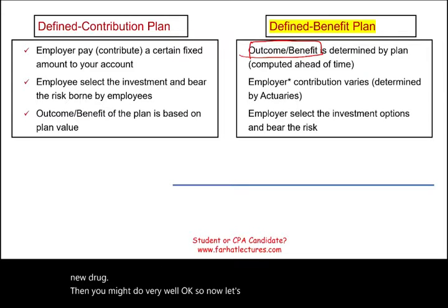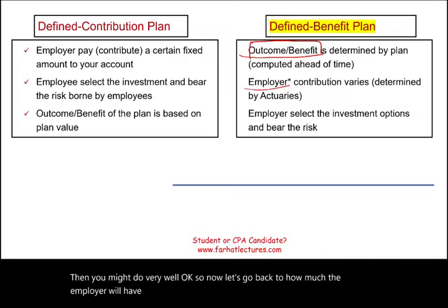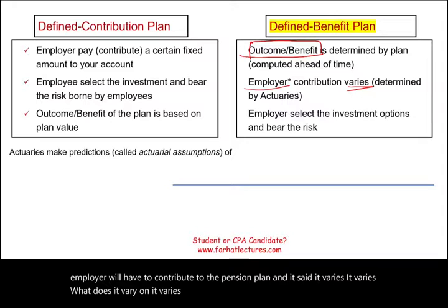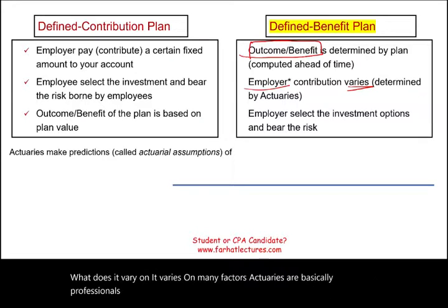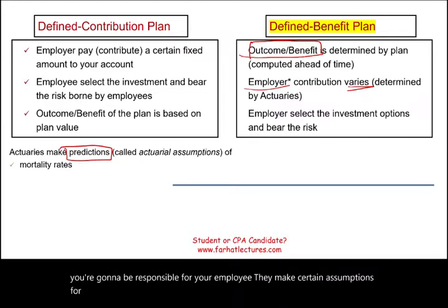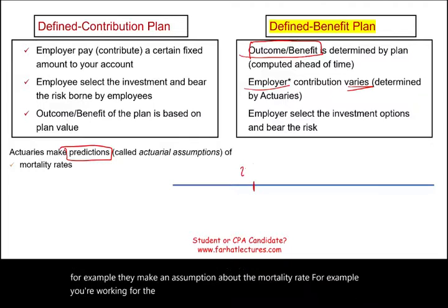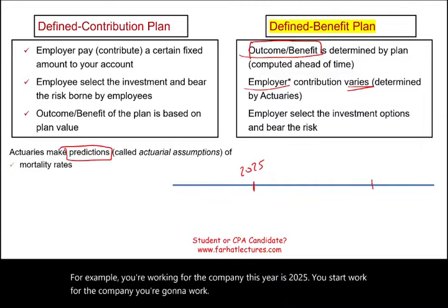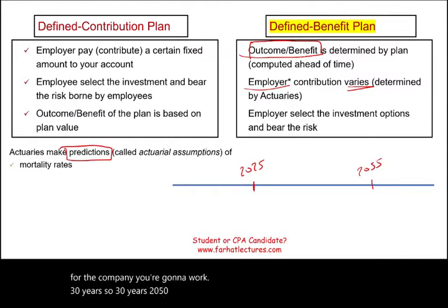How much the employer will have to contribute to the pension plan varies on many factors. Actuaries are professionals who try to predict and estimate how much the company will be responsible for. They make assumptions — for example, about the mortality rate. You start working for a company in 2025, you're going to work 30 years, retiring in 2055, and they need to determine how many years you are going to live.